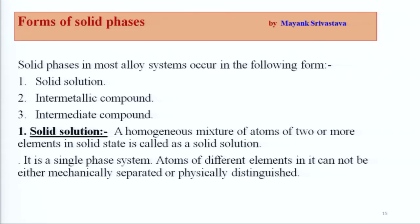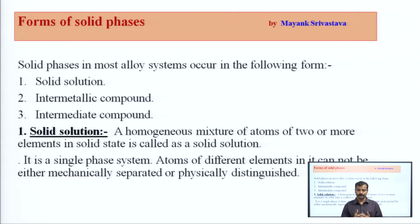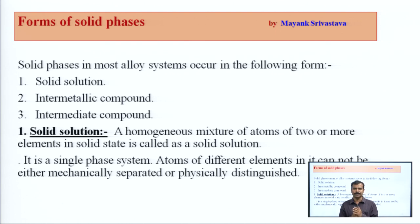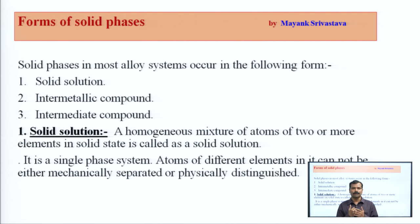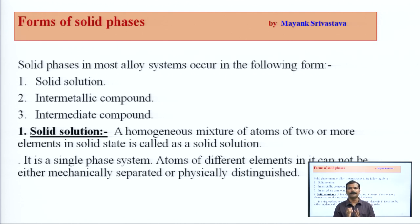Solid phases के forms होते हैं — solid, liquid, और gas। Solid phase में भी जब आप solvent में alloy मिलाते हैं तो उसके faces बन जाते हैं: solid solution, intermetallic compound, और intermediate compound। Solid phases in most alloy systems occur in these three forms.